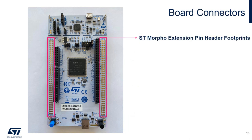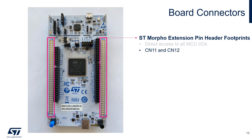Toward the middle of the board, on both the left and right-hand side, you will see header footprints. These provide direct access to all of the microcontroller's IOs and are denoted as CN11 and CN12 on the board.